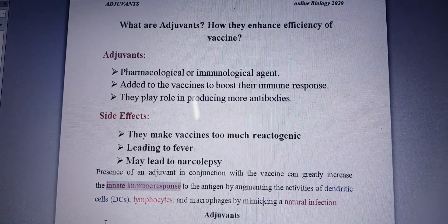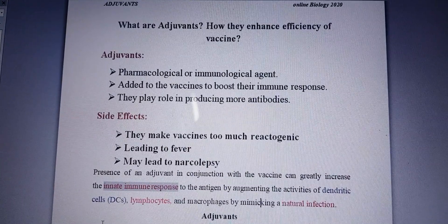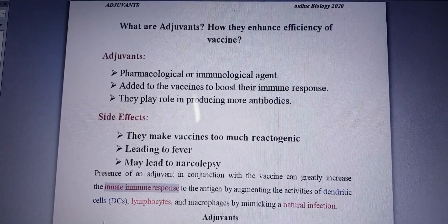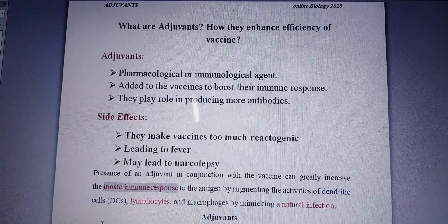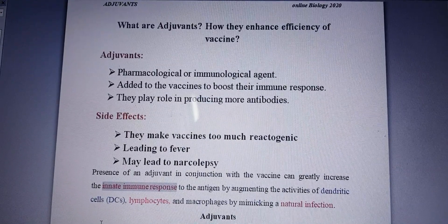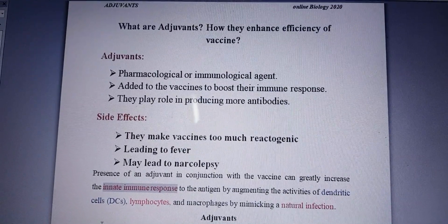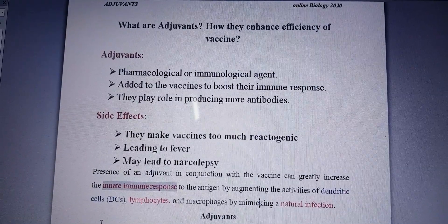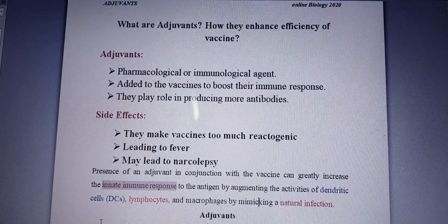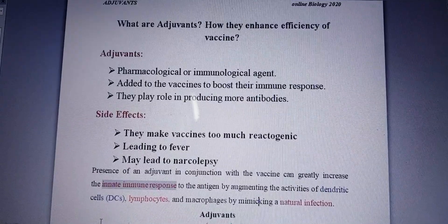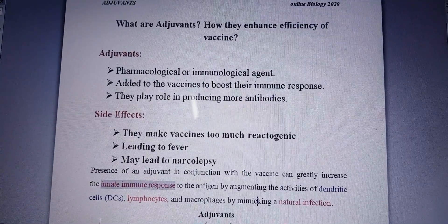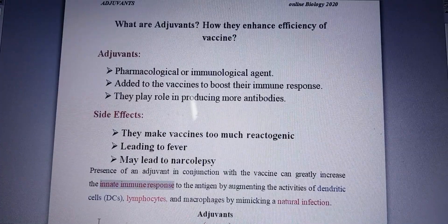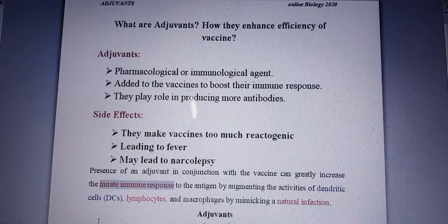First of all, we should recall what a vaccine is. A vaccine enhances the immune response by producing antibodies against a foreign particle. When a foreign particle attacks the cell, the cell recognizes it as a non-self particle. In response to that attacking antigen, the cell has to produce some antibodies. A vaccine plays a role in the production of that antibody.